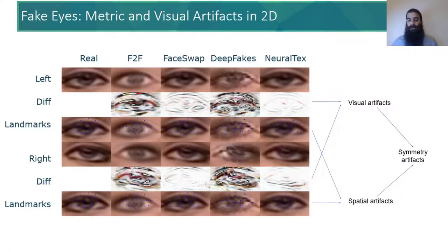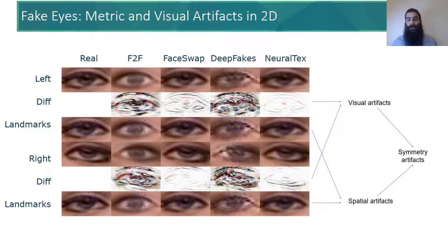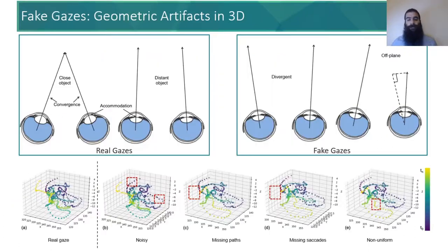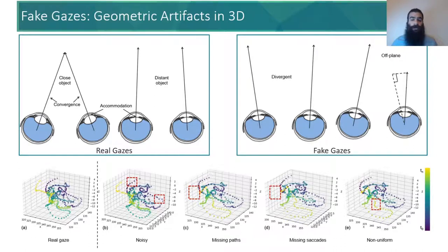As the eyes are the mirror to the soul, we investigate the flaws in the eyes of deepfakes. Comparing real eyes to fake ones, we observe significant visual and spatial artifacts as shown here with four different generative approaches. These artifacts happen both between frames and between left and right eyes, also causing broken symmetries.